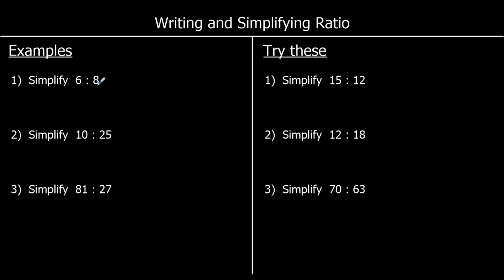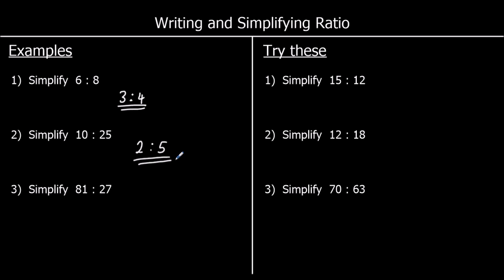As long as we do the same thing to both parts of a ratio, we can simplify it. In the first question, we're asked to simplify 6 to 8. Six and eight are both in the two times table, so we can halve them both. Half of 6 is 3, half of 8 is 4, so the ratio 6 to 8 simplifies to 3 to 4. For the next question, 10 and 25 are both in the five times table, so we can divide both parts by 5. Ten divided by 5 is 2, and 25 divided by 5 is 5. So 10 to 25 simplifies to 2 to 5.